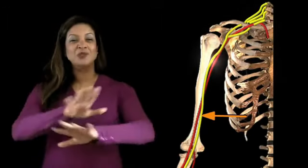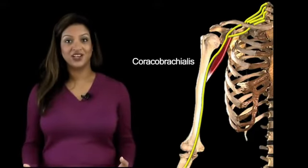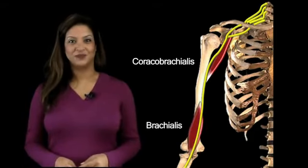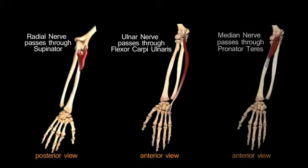The median nerve has absolutely no branches whatsoever in the arm. On its journey down the arm, the median nerve initially lies on top of coracobrachialis and then brachialis muscles. Before entering the forearm, all three nerves that enter the forearm do so by passing between two heads of a muscle. The radial nerve passes through the heads of the supinator, the ulnar nerve passes through the heads of flexor carpi ulnaris, and the median nerve passes through the heads of pronator teres — a welcome to the forearm, if you like.